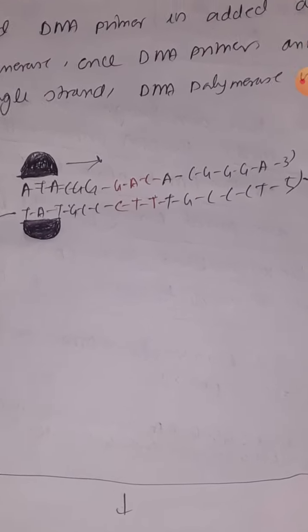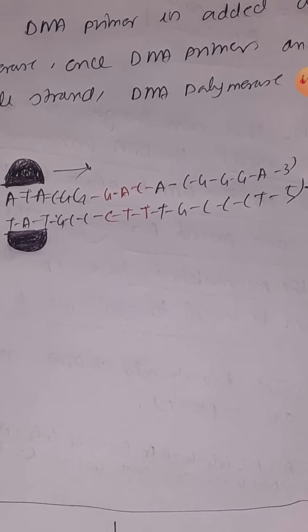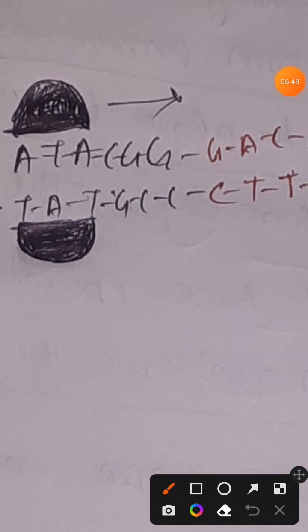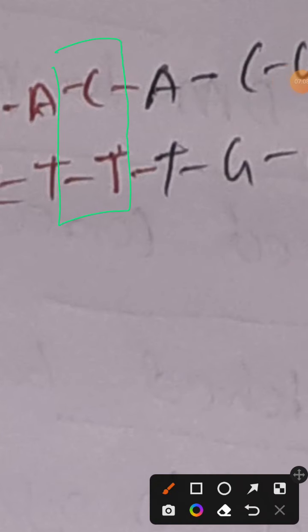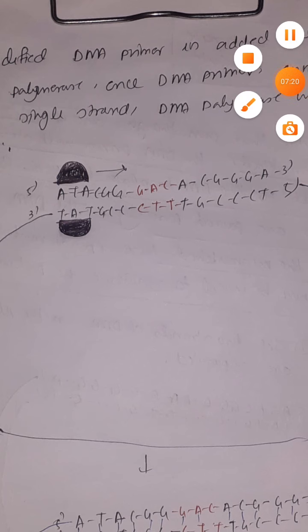Your question might be: if we have incorporated a wrong base that is not complementary to the template base, how can we anneal the primer? Remember, if you provide the necessary temperature and environment that normal primer annealing requires, then all the other bases except those two mismatched ones will form hydrogen bonds among themselves. Only the two mismatched bases will not form any hydrogen bond.